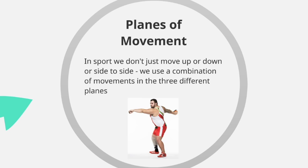The thing to remember with planes of movement is that although we've identified examples of skills that move in one particular plane, a lot of skills use a combination of movements within all three different planes. For example, a discus thrower has rotation occurring at the hip in the transverse plane, flexion in his legs in the sagittal plane, and abduction in the frontal plane to get his arms up in preparation to throw the discus.